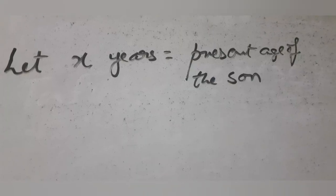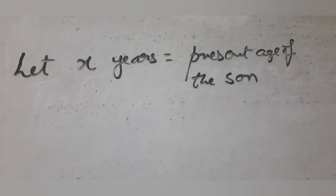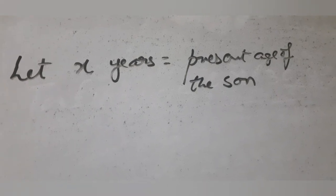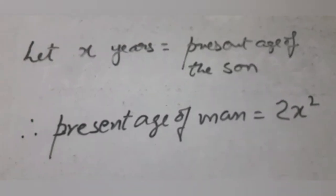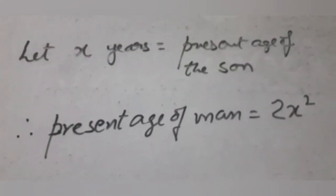Let x be the present age of the son. According to the question, the age of the man is 2 times the square of the age of his son. So, present age of the man is 2 times x square.